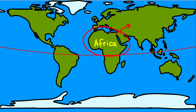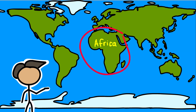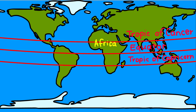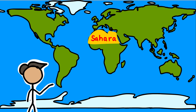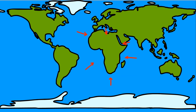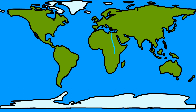A large part of Africa lies in the northern hemisphere. It is the only continent through which the Tropic of Cancer, the equator, and the Tropic of Capricorn pass. The Sahara Desert, the world's largest hot desert, is located in Africa. The continent is bound on all sides by oceans and seas. The world's longest river, the Nile, flows through Africa.